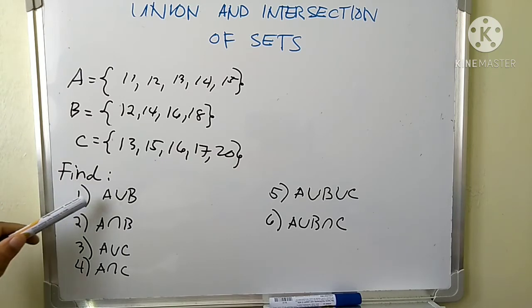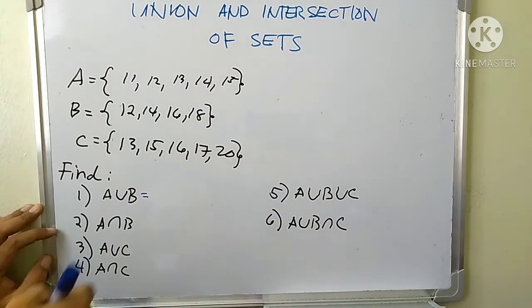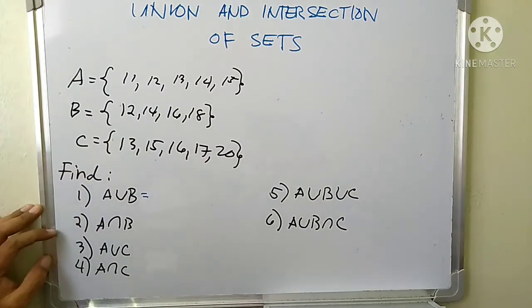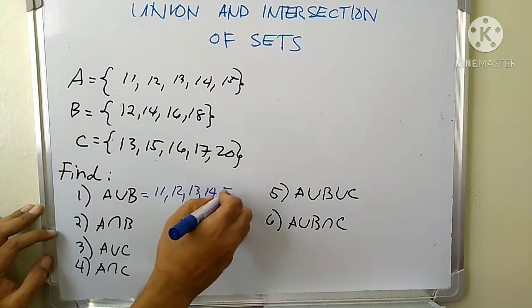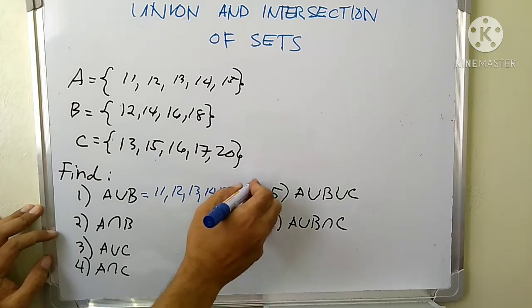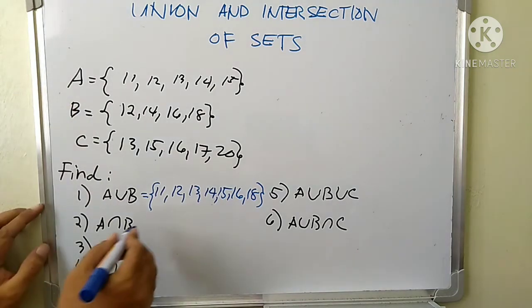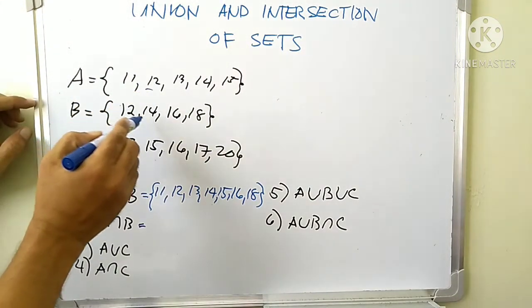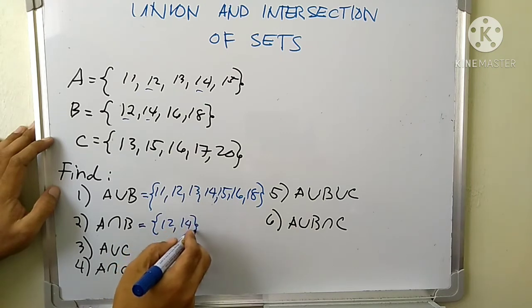We are going to find number one, A union B. So what is the answer? Let's find the union of A and B. We have to write all the elements, distinct elements. This is the union of A and B. Another is the intersection of A and B. What are those common in A and B? We have 12, 14. That's all. 12 and 14 is our intersection.